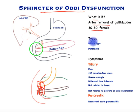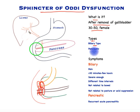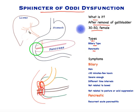There are really two types of sphincter of Oddi dysfunction. One is the biliary type, due to problems with the sphincter around the bile tube, and the less common and less well understood pancreatic sphincter of Oddi dysfunction, due to the sphincter around the pancreas tube.